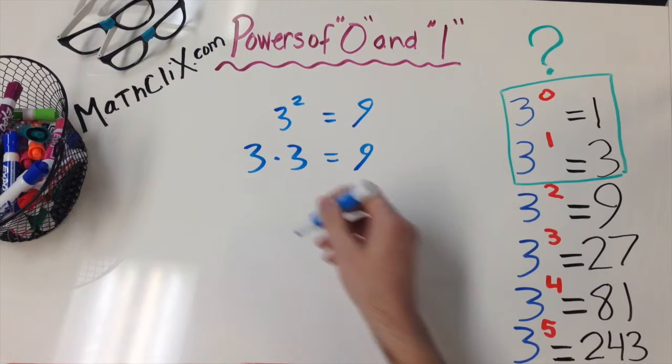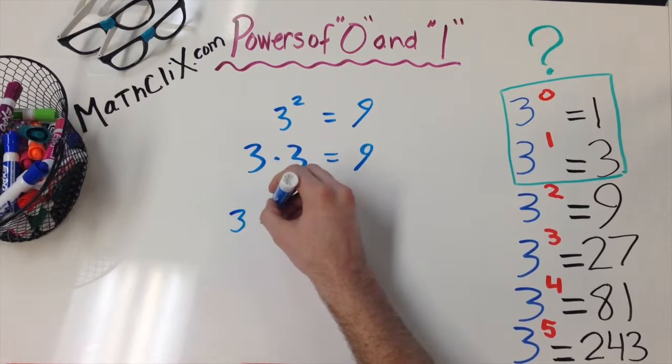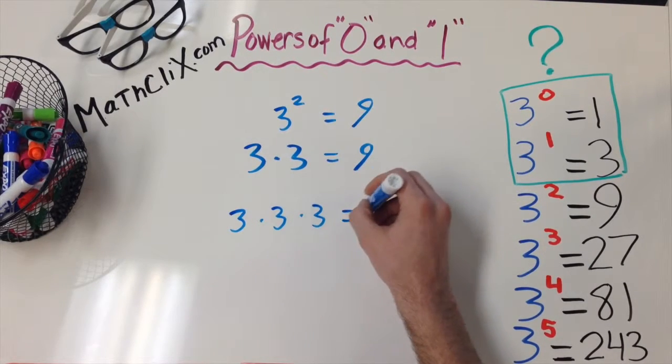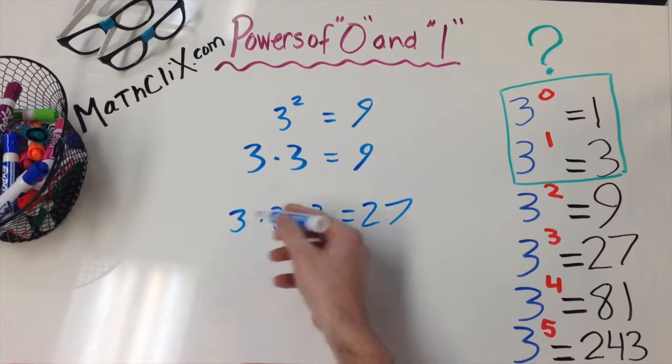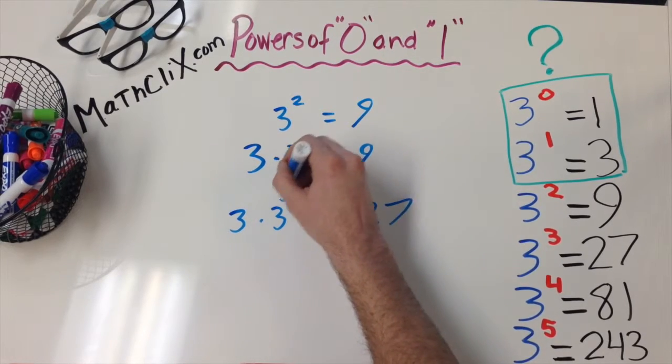Same with the cube. 3 times 3 times 3 equals 27. 3 of the 3's? 3 to the 3.